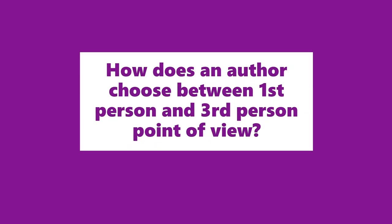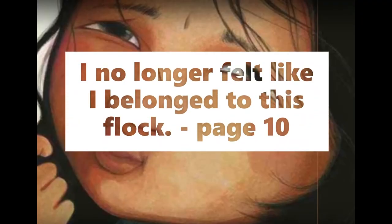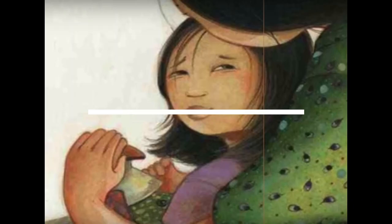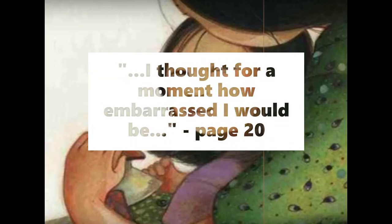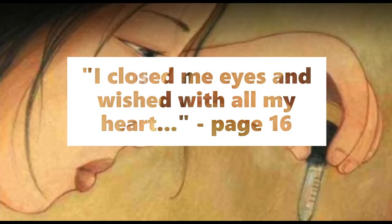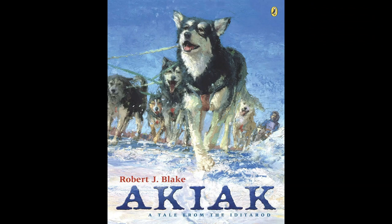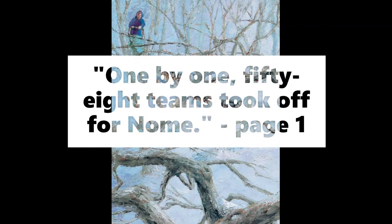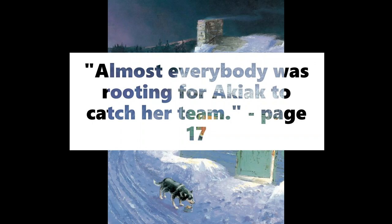How does an author choose between first person and third person point of view? Is one of them considered better than the other? Neither one is considered better — it just depends on the type of story the author is writing. For example, with Not My Girl, first person point of view was a great choice because the author really wanted to show lots of thoughts and feelings that only Margaret could tell us about. In contrast, third person point of view made sense for Akiak, because if you're telling a story in third person, you can say what's going on in multiple places all at the same time — like Mick being in one part of the course when Akiak was in another.